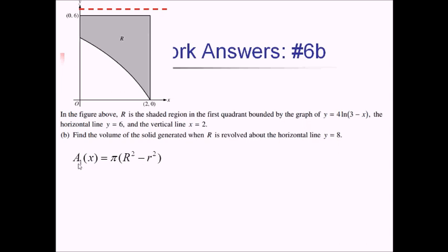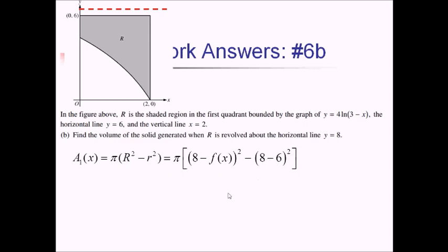Big R is the distance from the axis of revolution to the outer part of the bounded region — the part further away — so that's 8 minus f of x. Little r is just the line y equals 6, the closer of the two radii, which gives 8 minus 6 squared, or 2 squared. Now to find the actual volume, I need to integrate this cross-section over the whole interval from 0 to 2: integral from 0 to 2 of A sub 1 of x, dx.